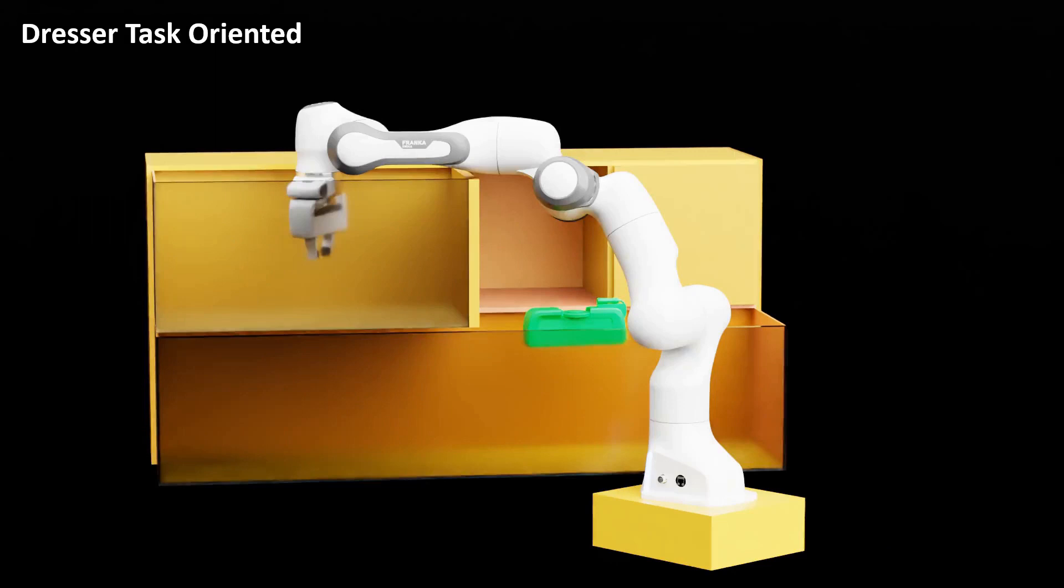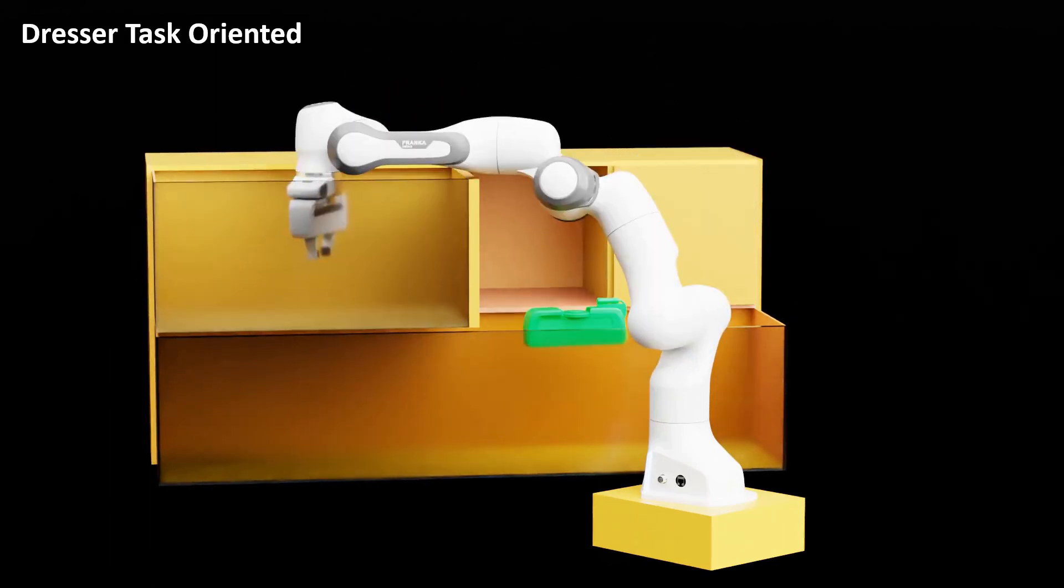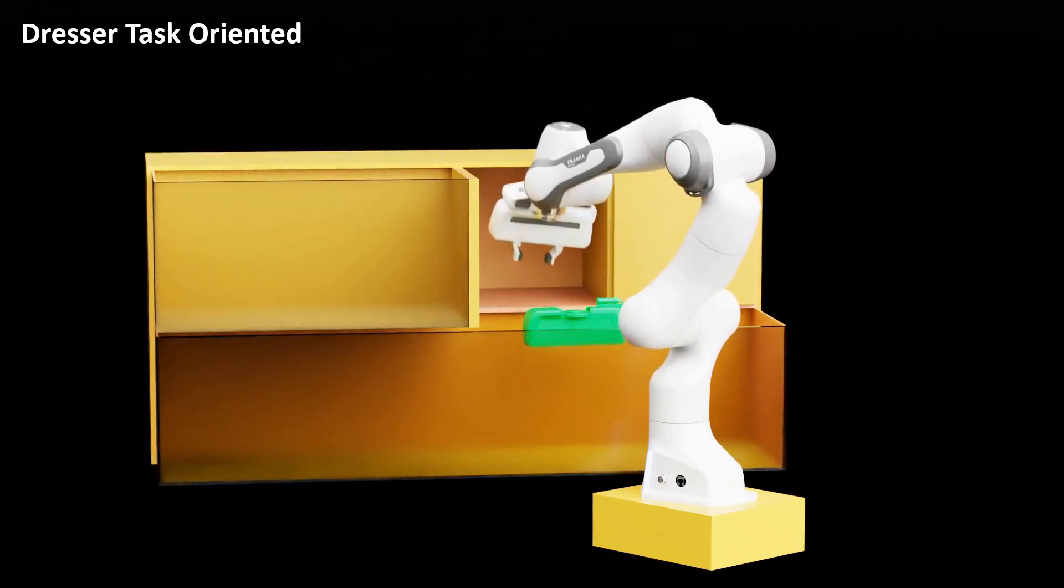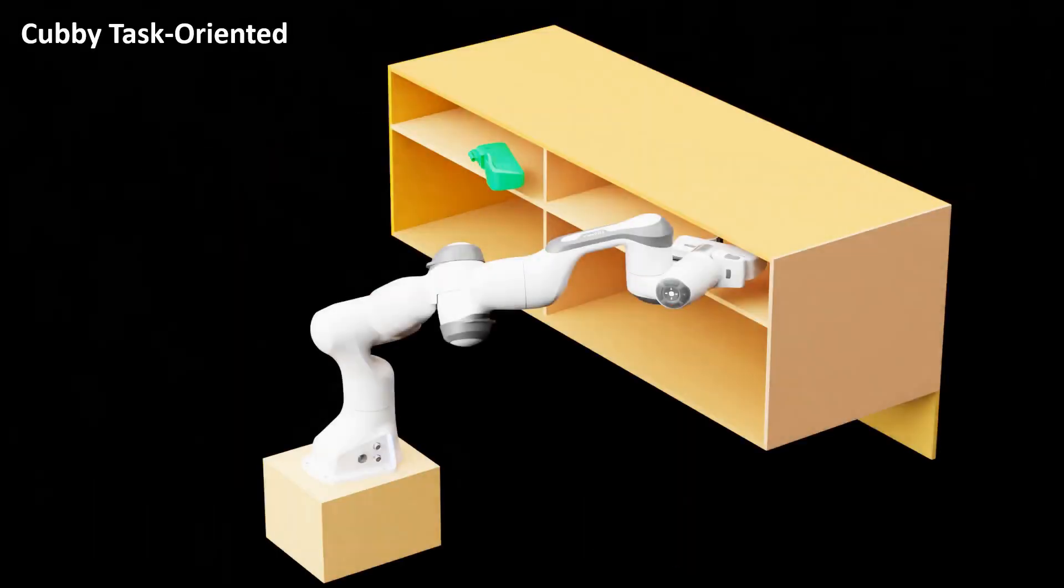The dresser environment for Motion Policy Networks is challenging for optimization as there are thin walls that the robot needs to navigate around. Kurobo doesn't struggle here because it has collision metrics that shape the collision cost appropriately to move around thin obstacles. As one final example from the benchmarking dataset, the robot moves from one narrow cubby to another.